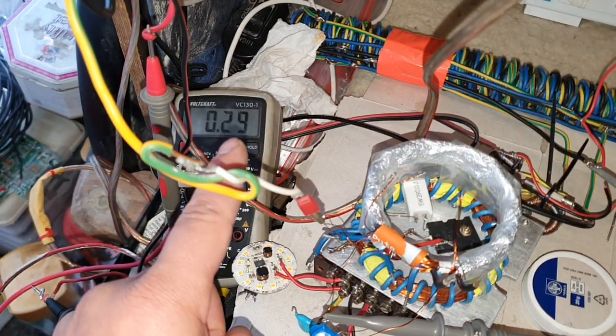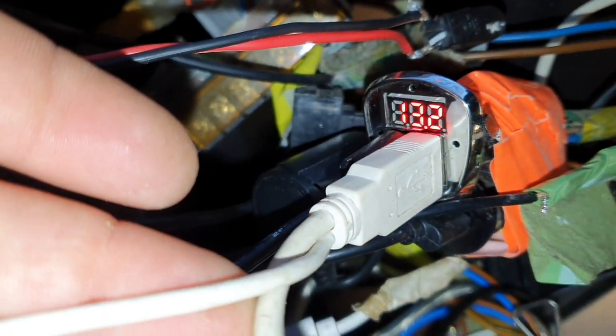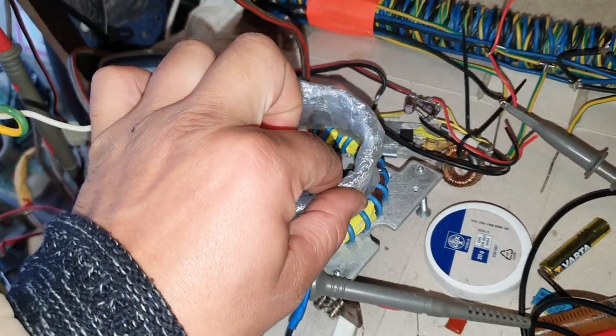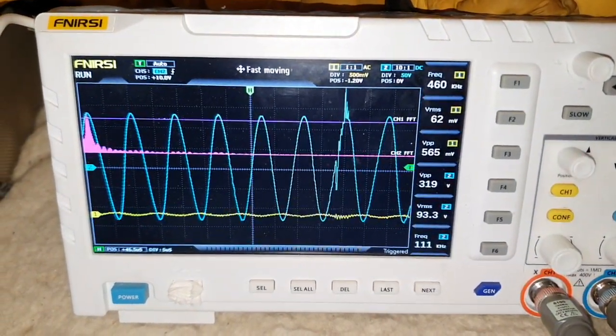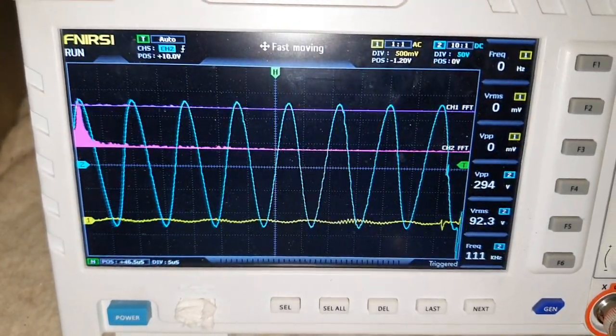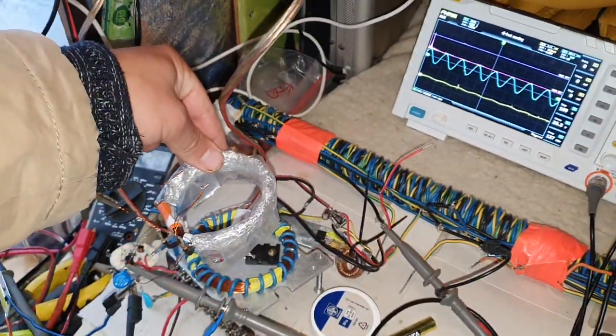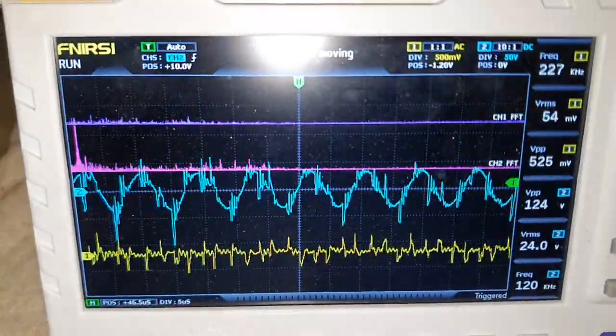That is 0.29 amps at 13.2 volts. On the separate quadrifilar, we are measuring 350 volts peak, 93 volts RMS. If I increase the distance, then 25 volts RMS.